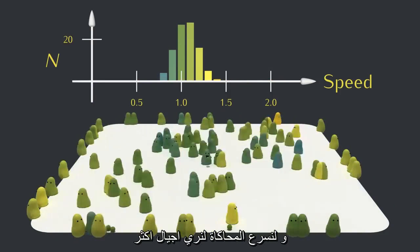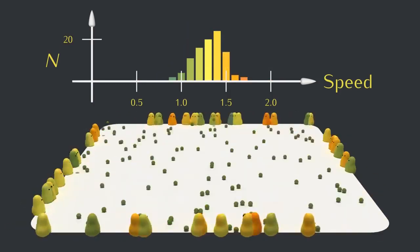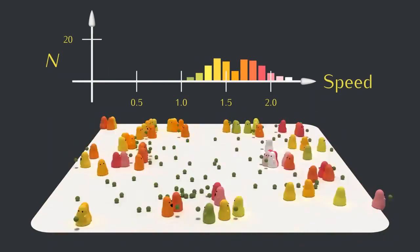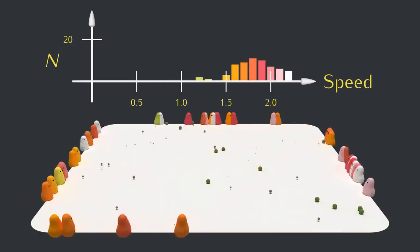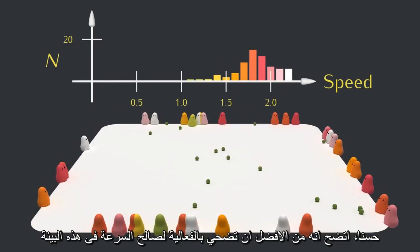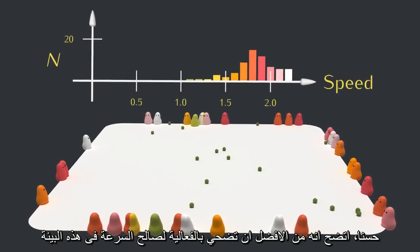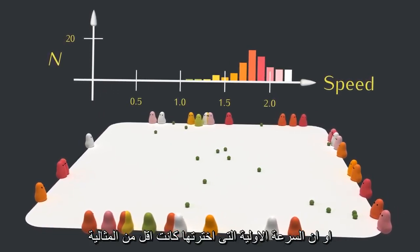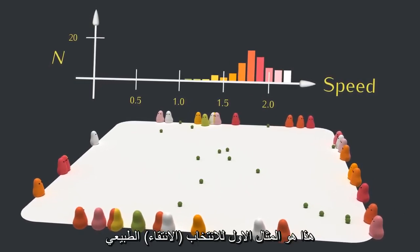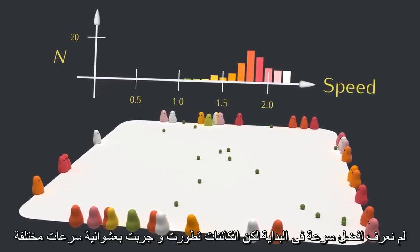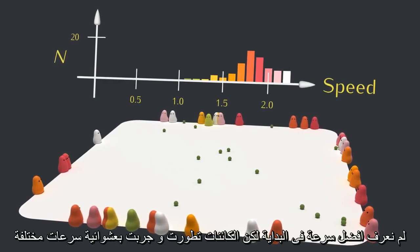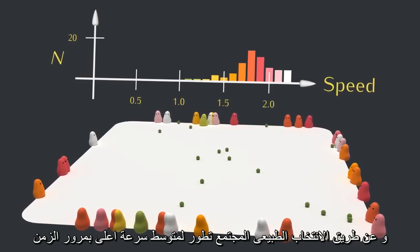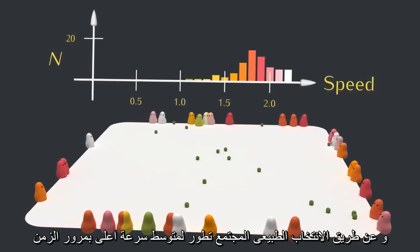And let's speed it up a bit so we can see more generations. Alright, so it turns out to be worth sacrificing efficiency for speed in this environment — or at least the initial speed value I picked was slower than optimal. This is our first example of natural selection. We didn't know the best speed value going in, but the creatures mutated and somewhat randomly tried out different speed values, and then through natural selection the population evolved to have a higher average speed over time.